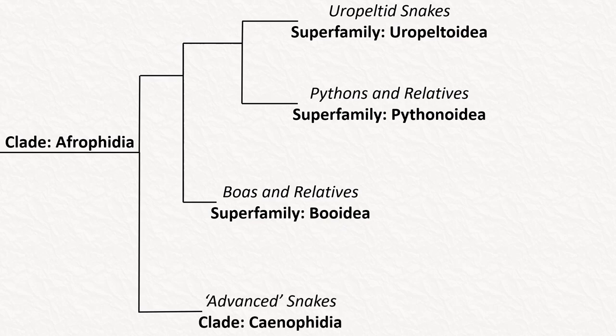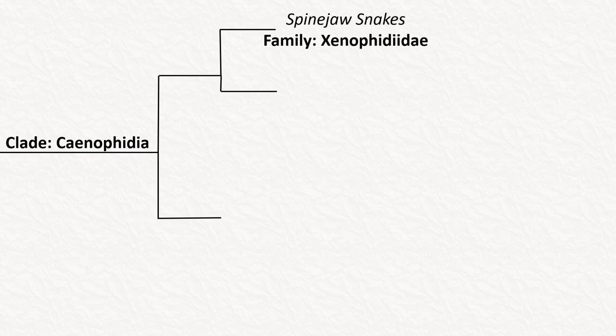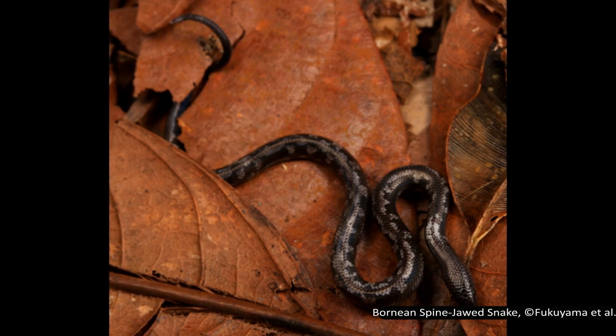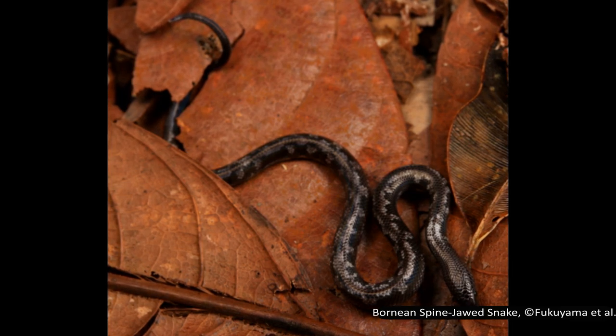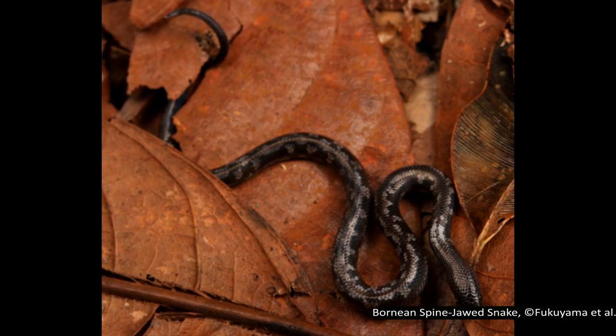The next group is a clade labelled Caenophidia, commonly called the advanced snakes — though this name seems a little unfair, as the pythons and boas are not particularly primitive. The first family of the advanced snakes is Xenophidiidae, or the spine-jaw snakes. This common name comes from the spiny roof of their mouth, and they also have bumps on the head scales that can be used as a sensory organ. There is one genus with two species found in Malaysia and Borneo. Very little is actually known about these snakes — they are believed to be fossorial and definitely eat lizards, but may also eat other small vertebrates.